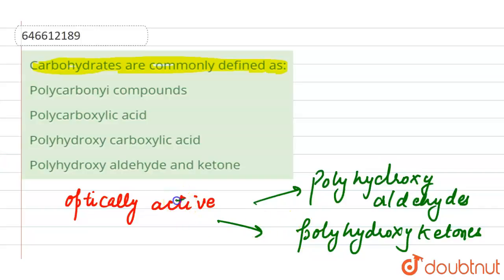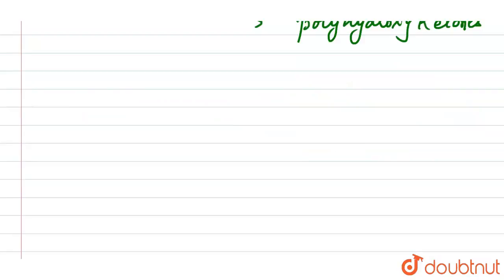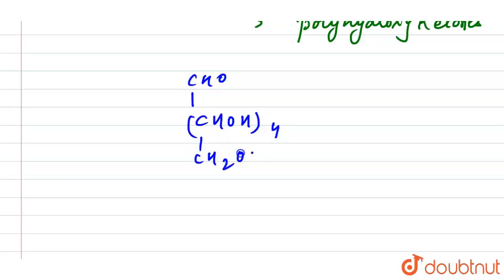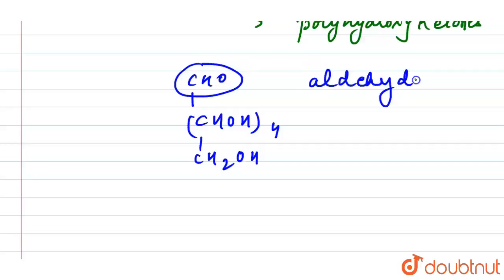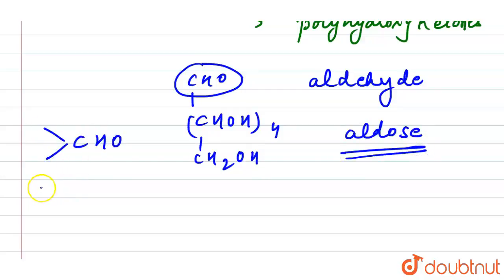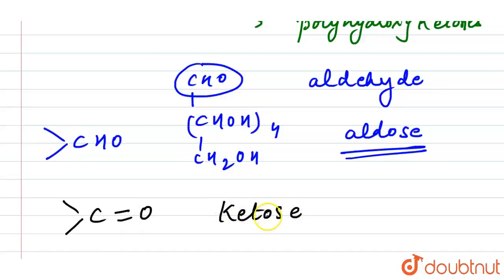The modern definition states carbohydrates are optically active polyhydroxy aldehydes or polyhydroxy ketones. Looking at the structure of glucose, we have a CHO group, four CHOH groups, and a CH2OH group. Because glucose contains the aldehyde (CHO) group, it belongs to the category of aldose.